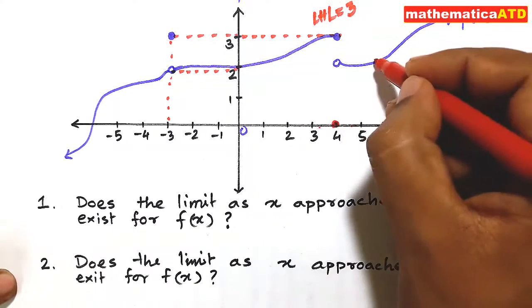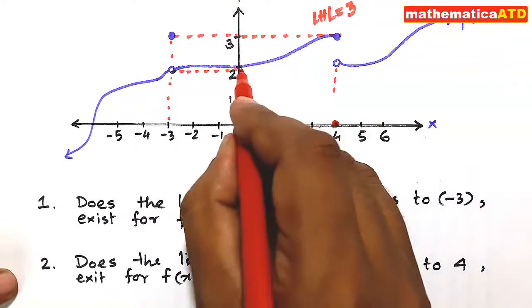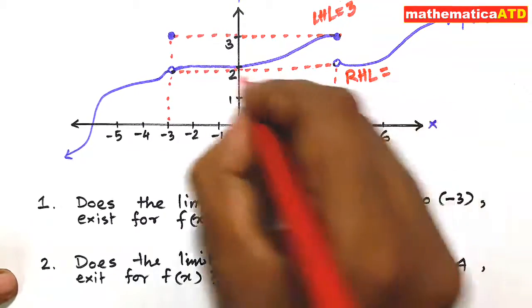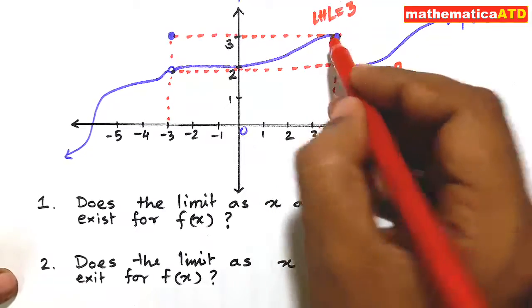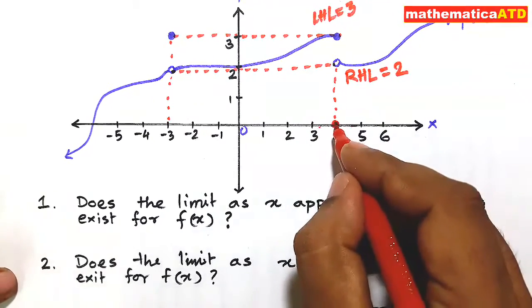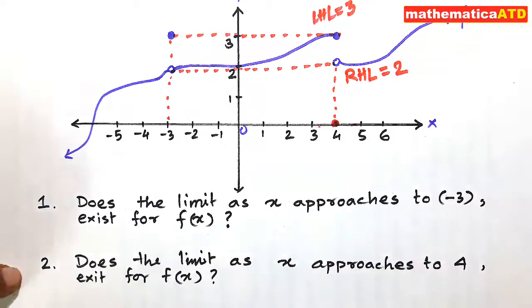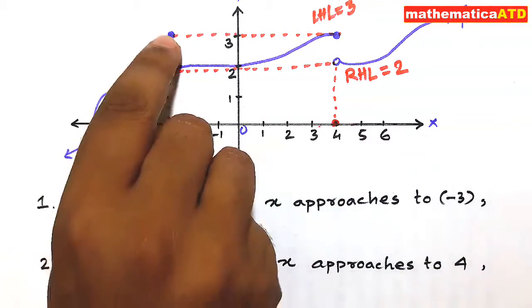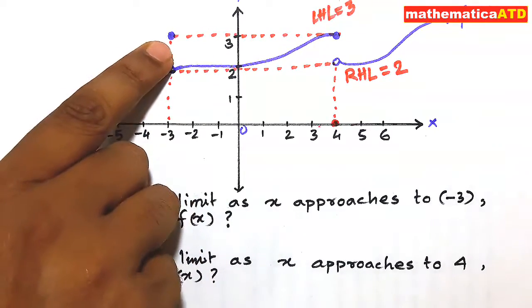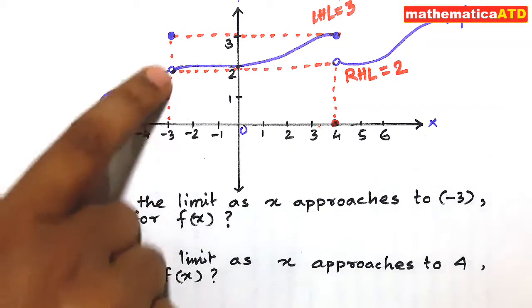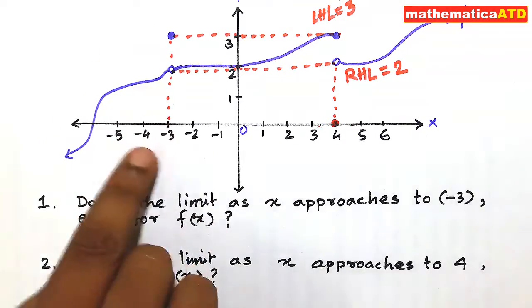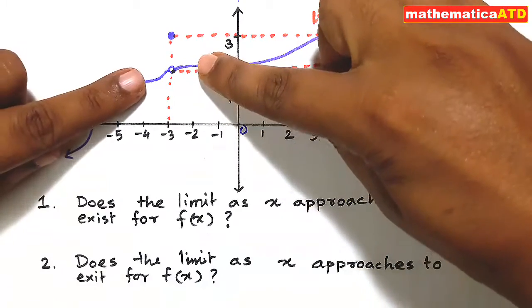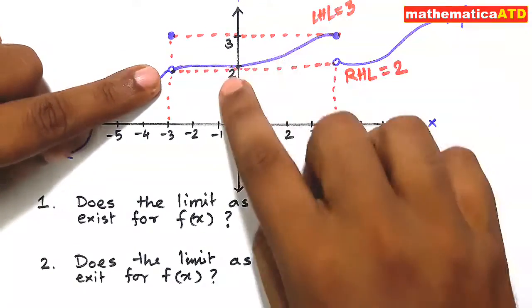When we proceed from the right side of 4, on this graph we are approaching the ordinate value 2. So RHL = 2 units. Since LHL ≠ RHL, the limit does not exist at x = 4. The key difference: at x = -3, both limits approach ordinate value 2, so the limit exists.